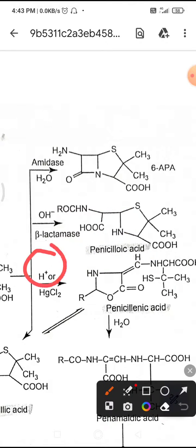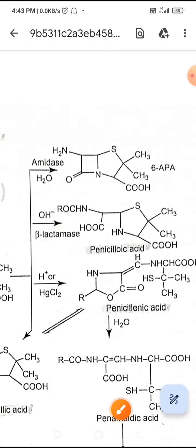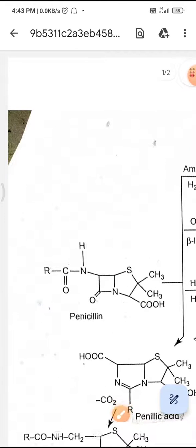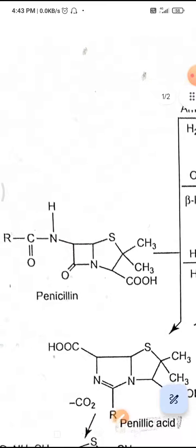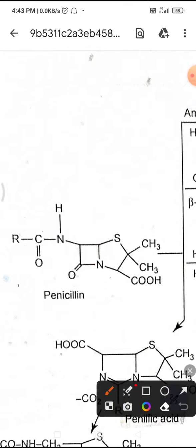In strongly acidic solution, for example pH less than 3, the penicillins are protonated. They are protonated at the beta-lactam nitrogen, and this is followed by nucleophilic attack of the acyl oxygen atom on the beta-lactam carbonyl carbon.